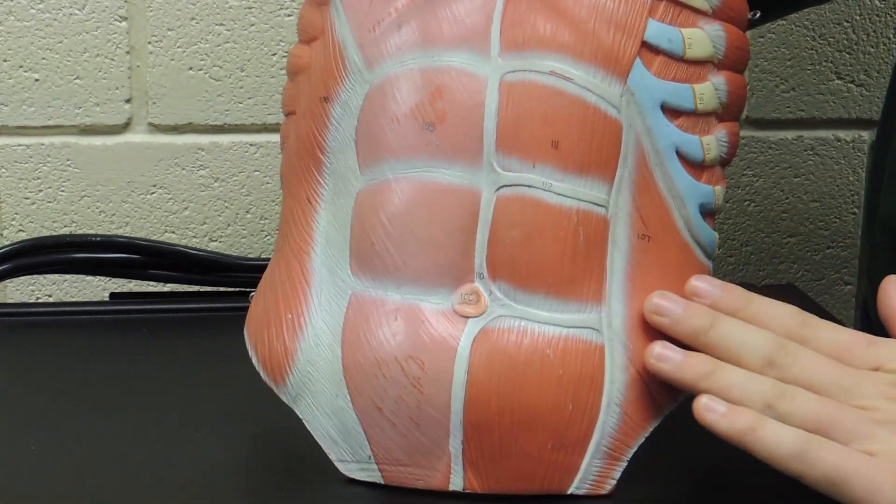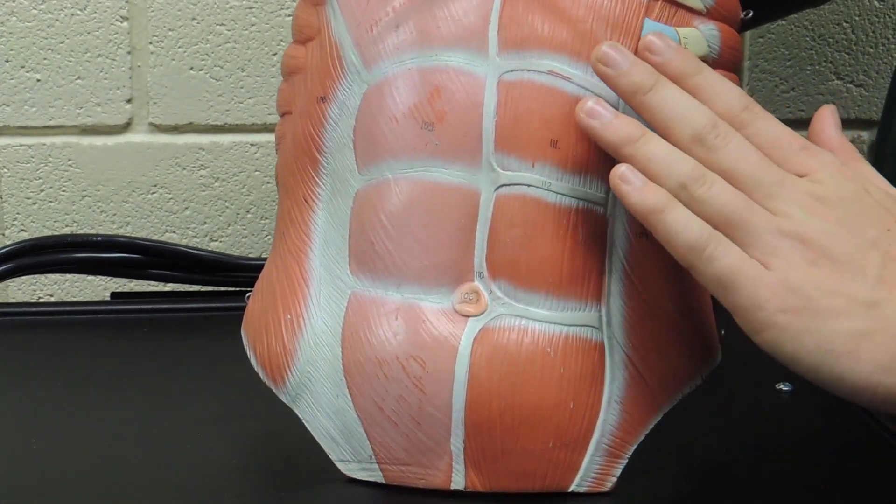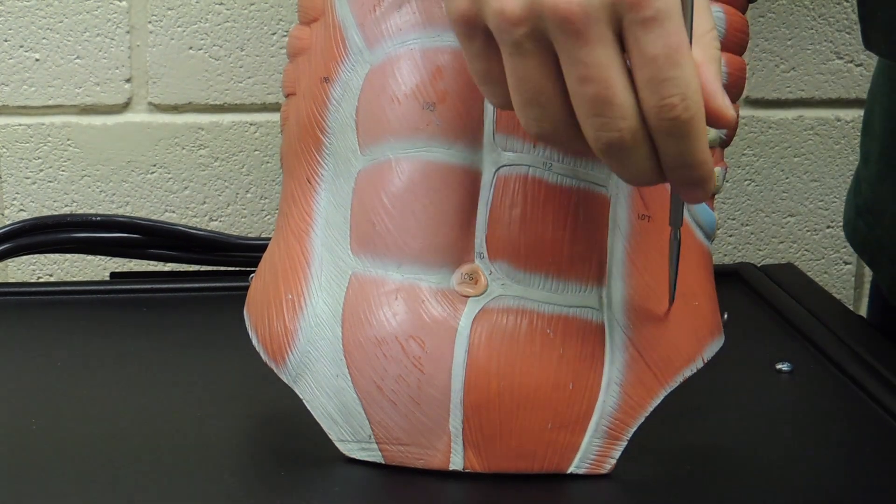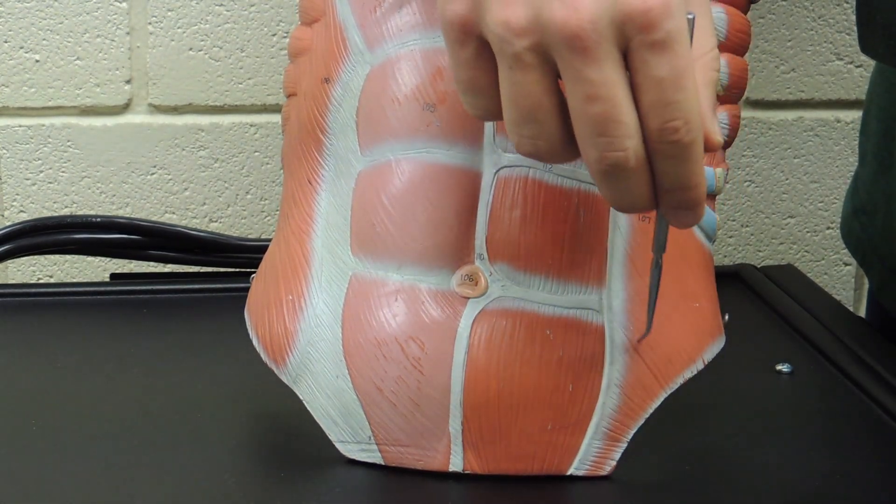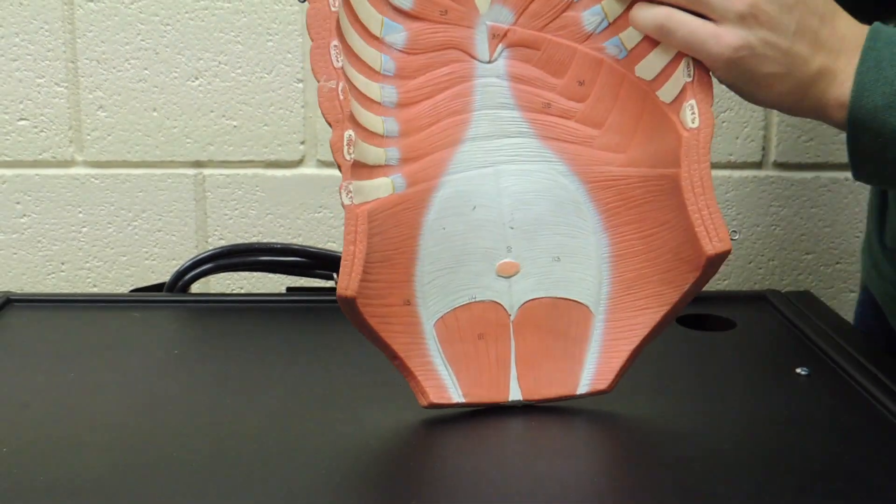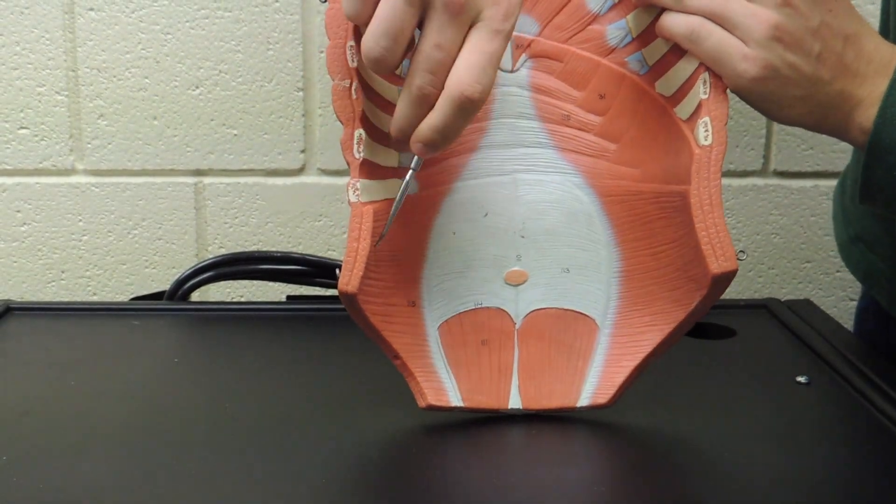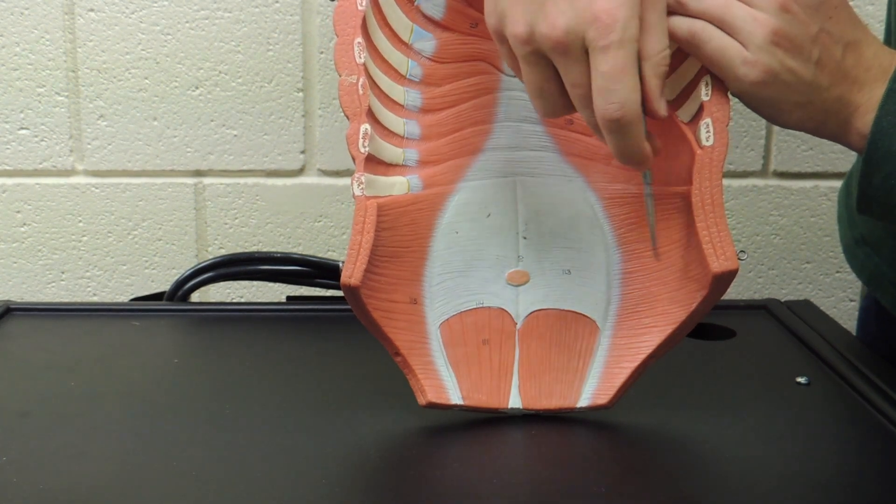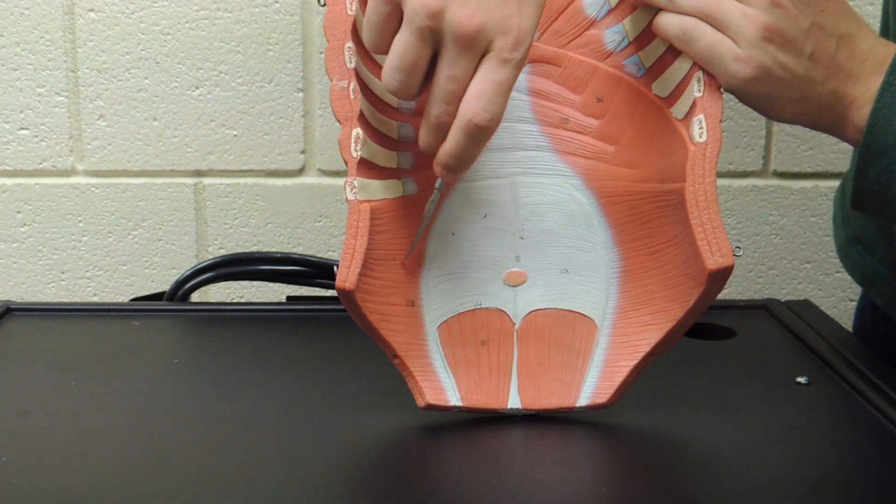If you see the fibers running more in upward fashion towards the body, these would be the internal abdominal oblique. And if we look on the back side you can see these transverse fibers running here and here, this would be your transverse abdominis.